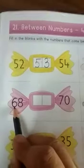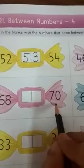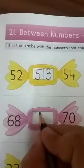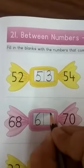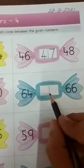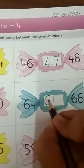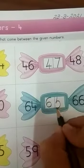Now next is 68, dash 70. 68, 69, 70. Next 64, dash 66. 64, 65, 66.